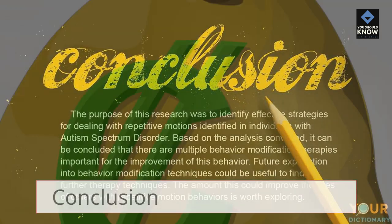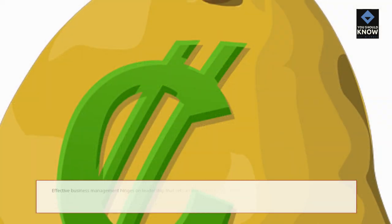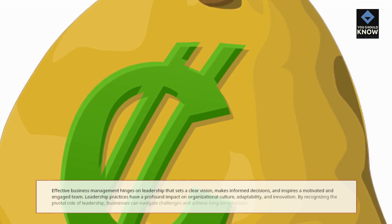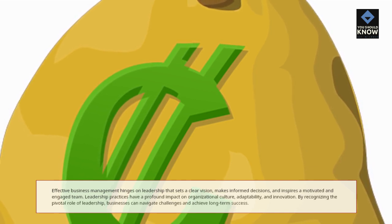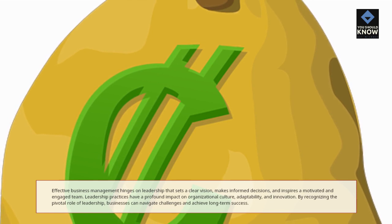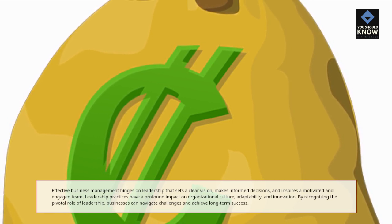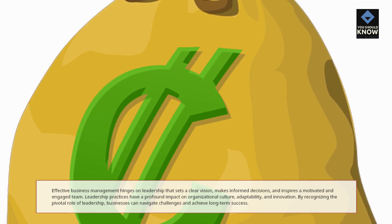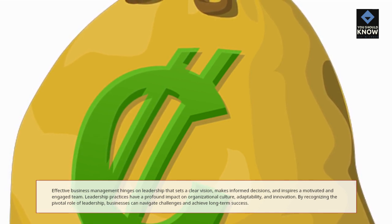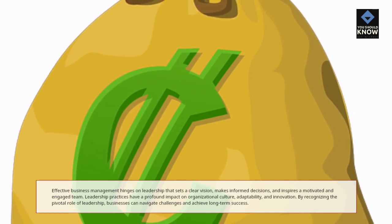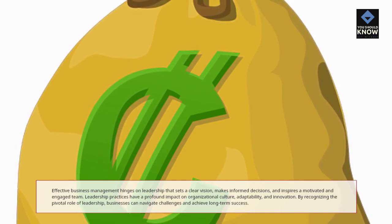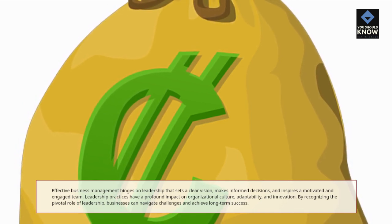Conclusion: Effective business management hinges on leadership that sets a clear vision, makes informed decisions, and inspires a motivated and engaged team. By recognizing the pivotal role of leadership, businesses can navigate challenges and achieve long-term success.